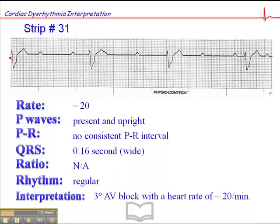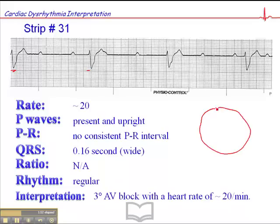A couple things I should mention about a third degree AV block. In terms of management — and I'll talk about this in more detail in a separate advanced life support presentation — the objective is to increase the heart rate. We do that typically by providing transcutaneous pacing if this is hemodynamically significant. If the patient is symptomatic, what you don't want to do is give them an antiarrhythmic like amiodarone or lidocaine, because these foci are coming from the ventricles and they are compensatory.